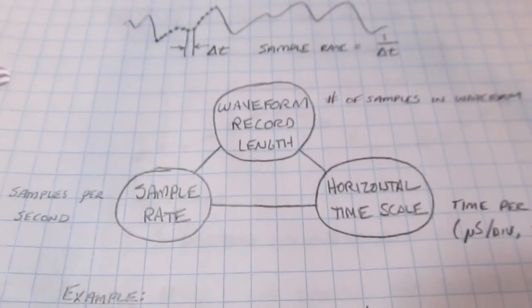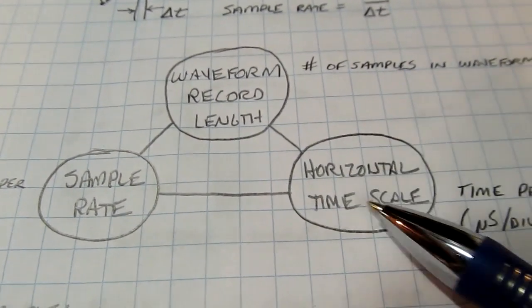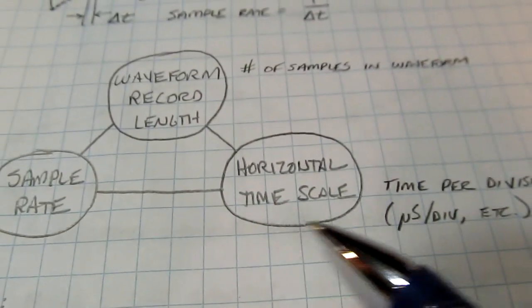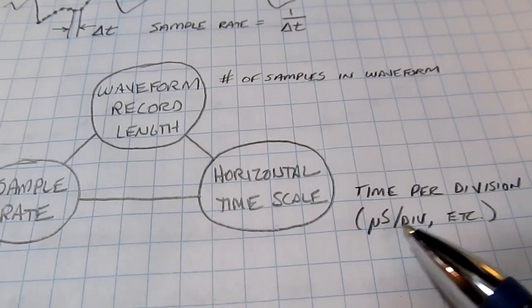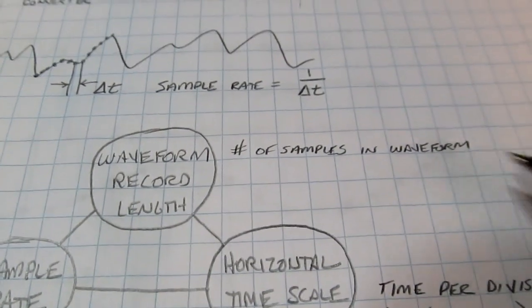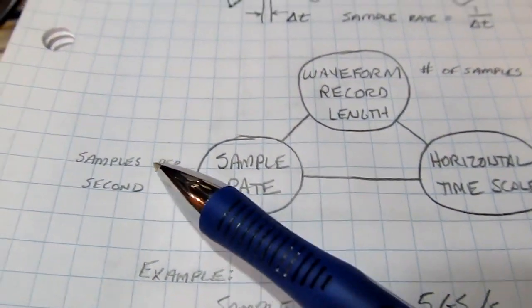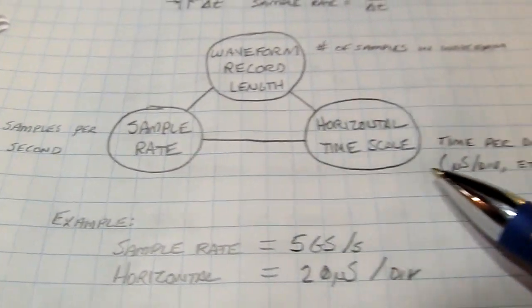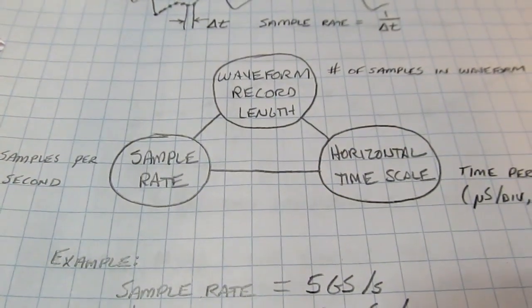The three parameters are really intimately linked together. We have sample rate and our horizontal time scale, which determines the total duration of the waveform we're going to capture — typically the nanoseconds or microseconds per division set on the scope. And then of course the waveform record length, which is the number of samples stored in RAM. It's simply a product of sample rate and capture duration that determines the overall record length.